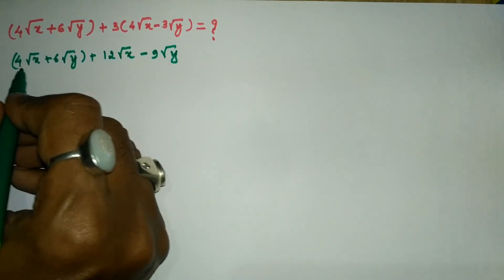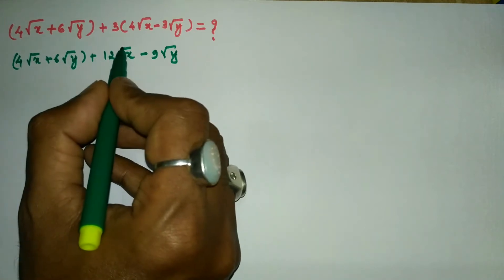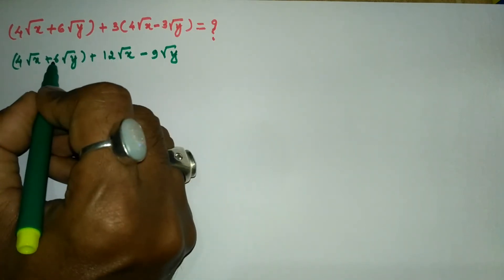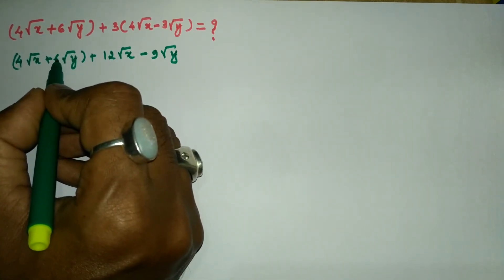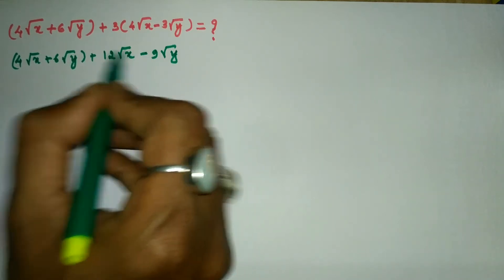Now, let us rearrange the terms. Bring this 12√x on this side and send this 6√y on the other side.